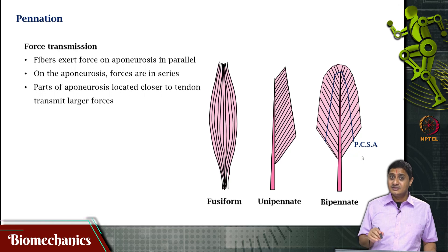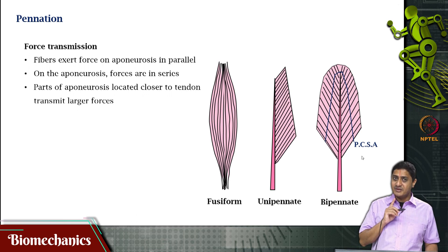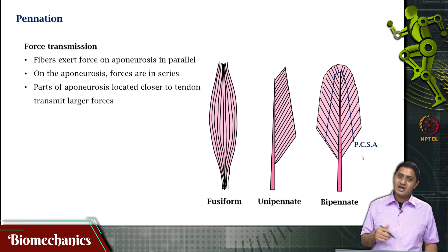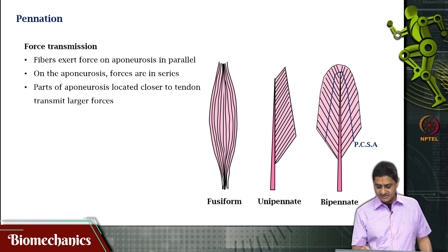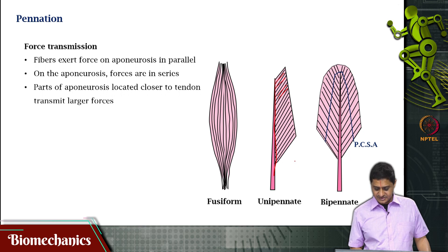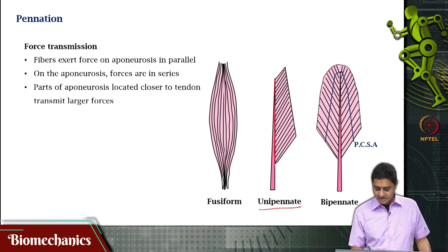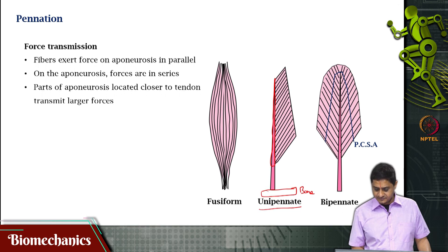If the muscle fibers are all parallel to the tendon, then the sum of all the muscle fiber forces will be the muscle force, but this is not always the case. Muscle fibers may or may not be parallel to the tendon. In many cases, the fibers are parallel to each other but not to the tendon — they are inclined at an angle, as in the case of a unipennate muscle. The internal tendon is the part attaching to the muscle fibers, while the external tendon is the part attaching to the bone.